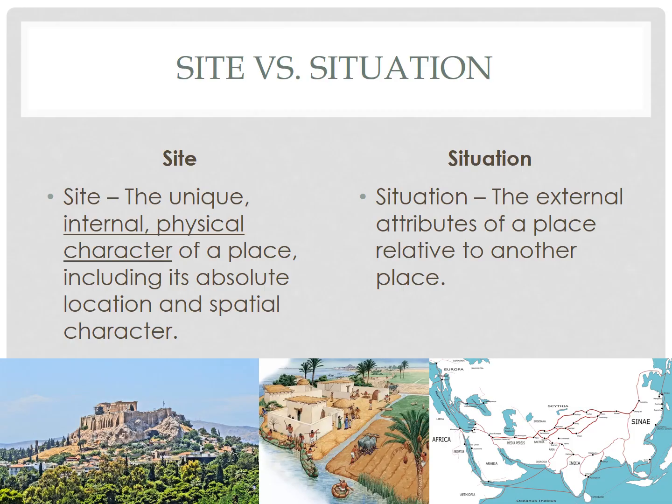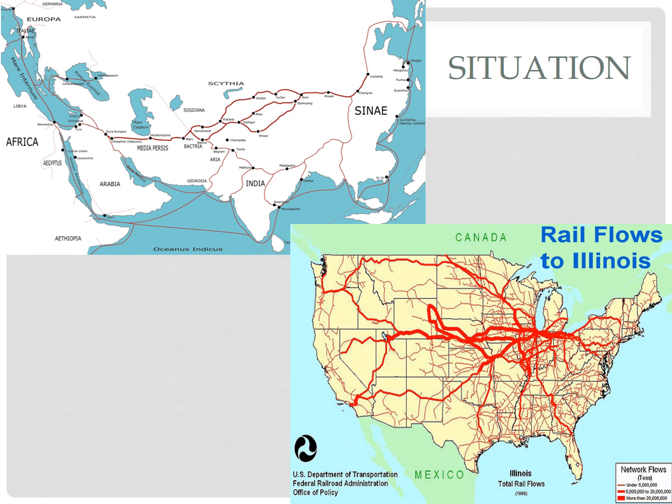Situation is the external attributes of a place relative to another place. Situation refers to the connections between a city's site and other sites — does the city have access to trading partners or other sources of labor? Major cities like Damascus and Samarkand emerged and thrived due to their situation along the legendary Silk Road, a trading route that connected Europe and Asia. Likewise, many US cities benefited from improvements in transportation and infrastructure. Chicago grew because of its situation within the United States: the Erie Canal connected the Great Lakes via the Hudson River to the Atlantic Ocean, and Chicago was the meeting point of many railway lines from both east and west.